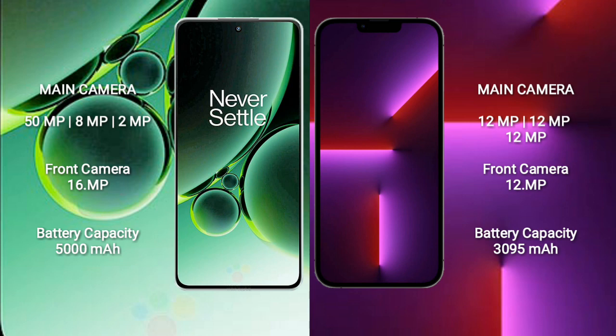OnePlus Nord 3 features a triple rear camera setup: 50MP, 8MP, and 2MP, with a 16MP front camera. iPhone 13 Pro also features a triple rear camera setup: 12MP, 12MP, and 12MP, with a 12MP front camera.